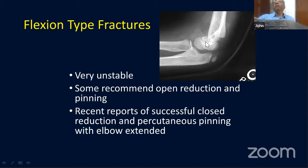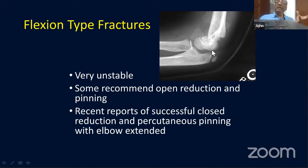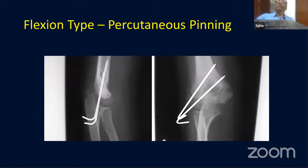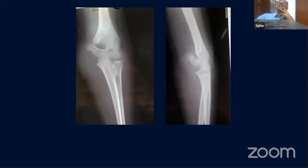With the flexion-type fracture, if you try to pin it in extension you will find it is displaced more. Give traction, get the medial-lateral reduction, then pin it in a relatively extended position. Watch the lateral view to ensure the distal fragment is not flexed up before inserting your pins.